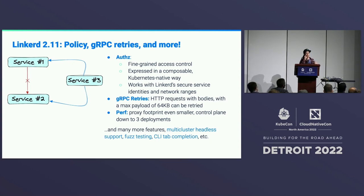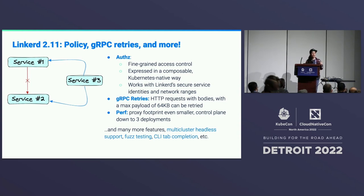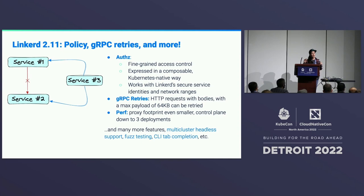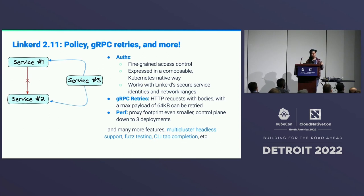This took us a while to figure out the model we wanted. We wanted it to be Kubernetes-native and feel natural without requiring people to learn a whole new system. So we introduced a new resource type called Server, which lets you define a specific port on your workload. As soon as you have a server, you can define authorizations — here are the identities allowed to access this server — and that's all enforced on the server side. Because we have the sidecar model with proxies inside the pod, each pod becomes its own trust barrier and can decide what traffic it accepts based on those policies.